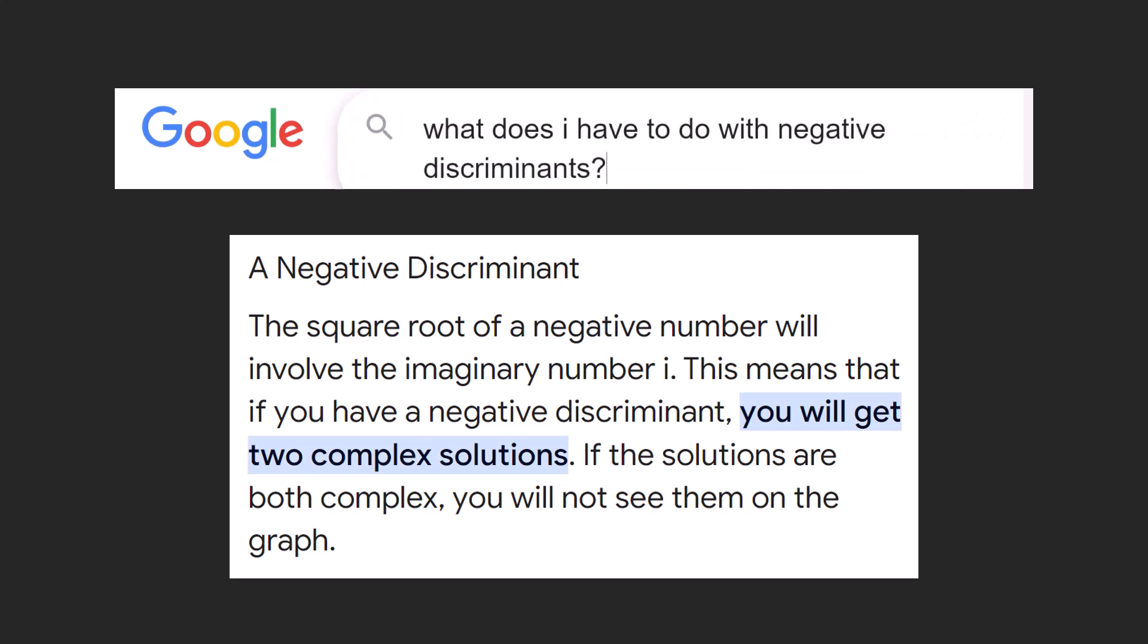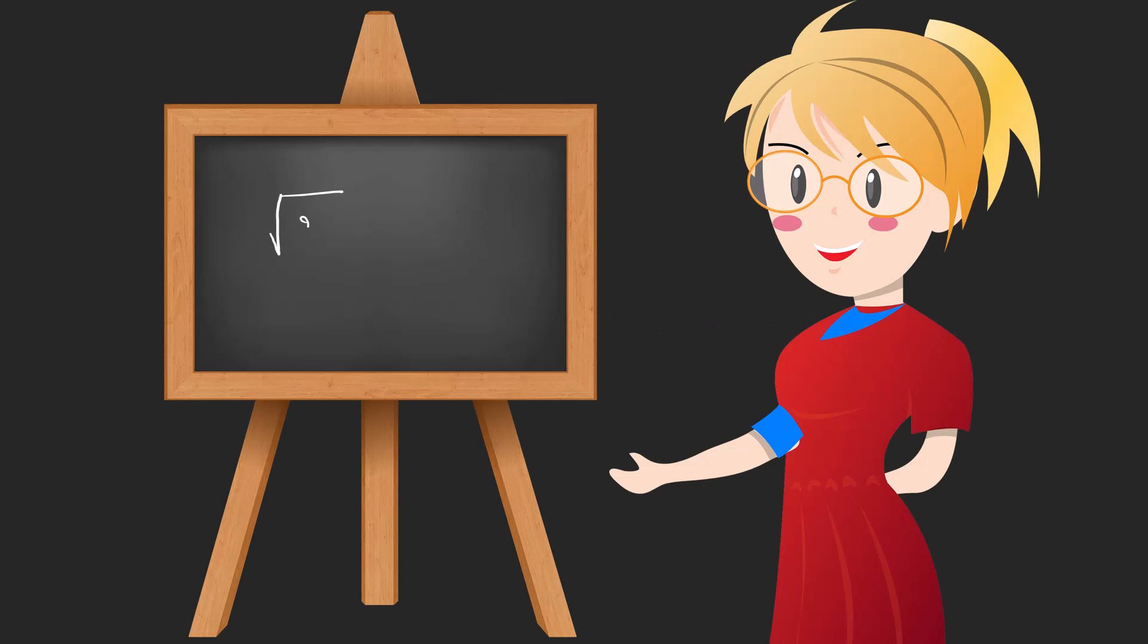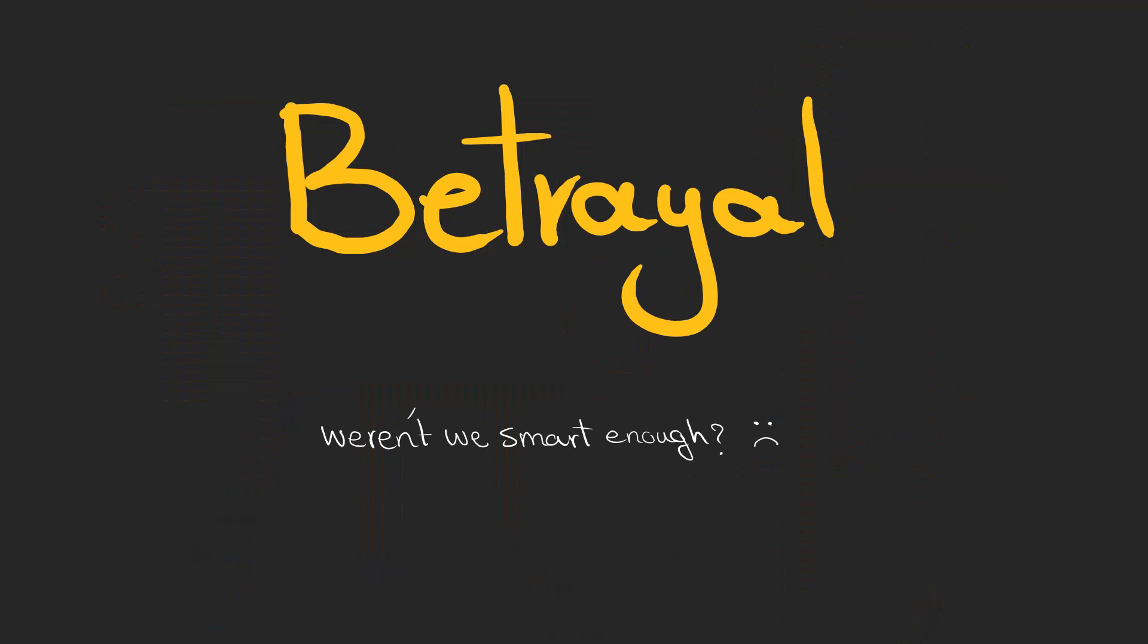I really needed to know what i has to do with negative discriminants, so I searched on Google and found this. It was the first time I came across the term imaginary numbers and let me tell you, I was shocked. I started thinking about all my high school math teachers like, seriously, betrayal. Weren't we smart enough in high school to be introduced to these magical numbers? Why hide them?